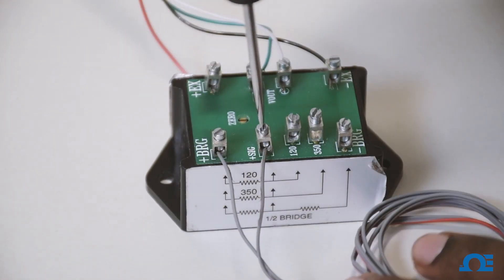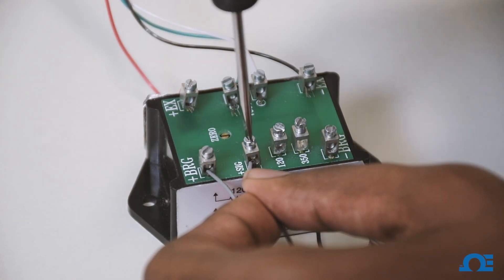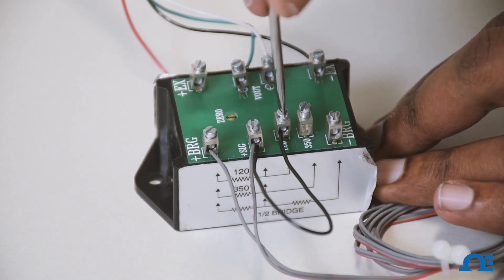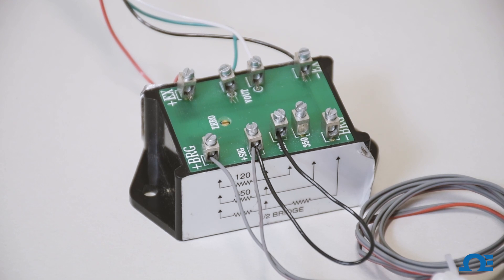The flying leads from the strain gauge connect to plus BRG and plus signal as indicated on the first schematic, and I have added a jumper between plus signal and 120 ohm. This is also listed in the BCM-1 manual.